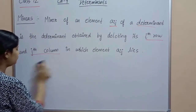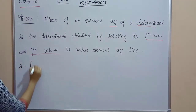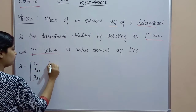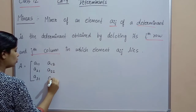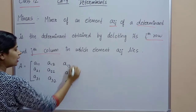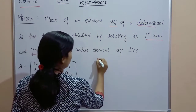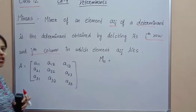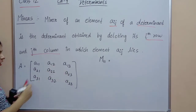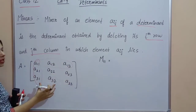Let me take a matrix A whose elements are a11, a21, a31, a12, a22, a32, a13, a23, a33. If I have to find the minor of a11 — that means I have to find M11 — I need to delete the first row and first column, write down the remaining elements, and find their determinant.